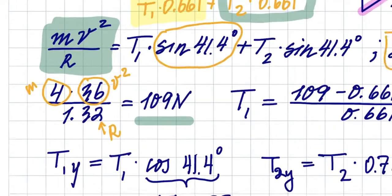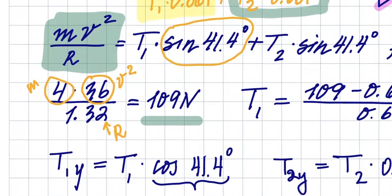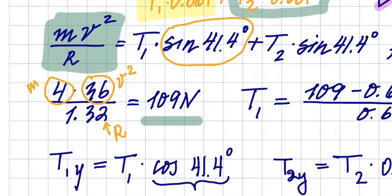So what I'm doing next is: T1 equals—T1 cosine of 41.4 degrees.